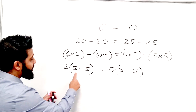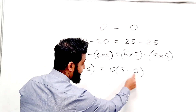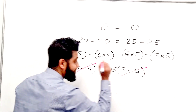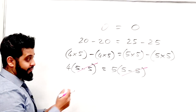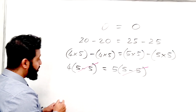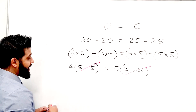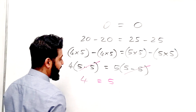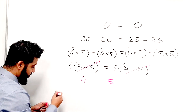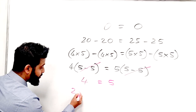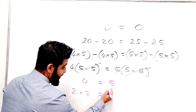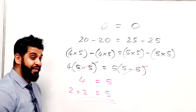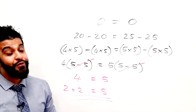Now I've got a (5 minus 5) bracket on both sides, so I'm going to cancel them out — divide by (5 minus 5). So what am I left with? I'm left with 4 is equal to 5. And 4 can be written as 2 plus 2, and that is 5. So 2 plus 2 is equal to 5, and I've proved that to you mathematically.